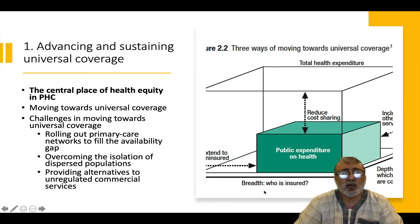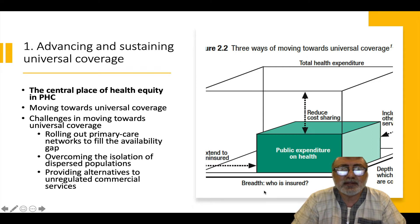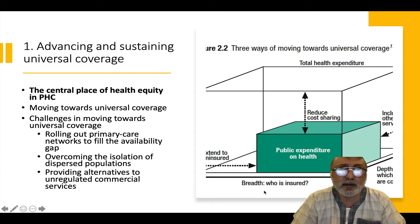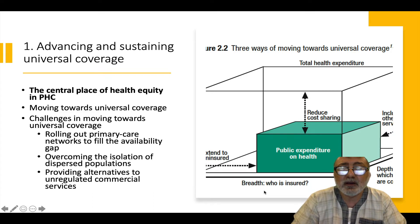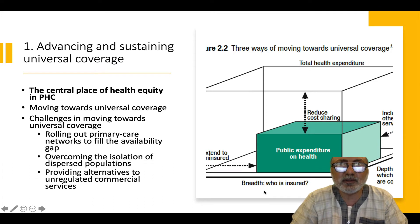The key idea of universal coverage is that health equity needs to be driven by primary health care being central to it. Using this cube model, it needs to cover more people until it covers everyone, reduce the cost to people — reducing out-of-pocket expenditures and catastrophic health expenditure — as well as finding ways in which as many services as possible are included in the coverage for the entire population at the least cost possible.